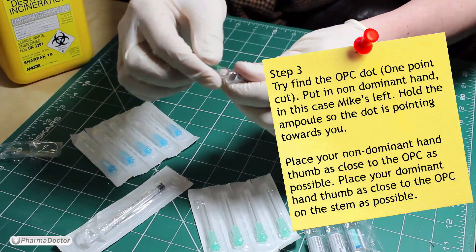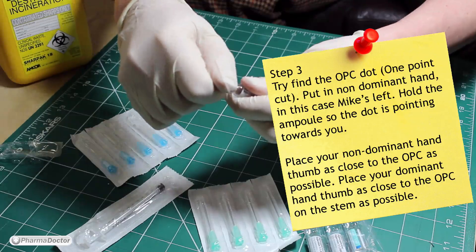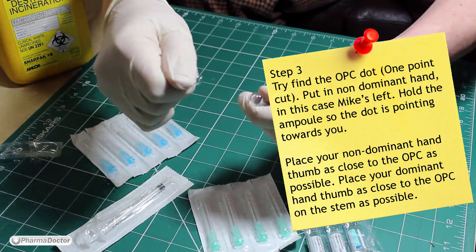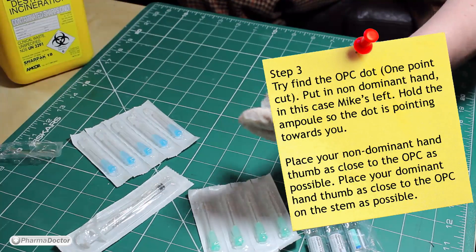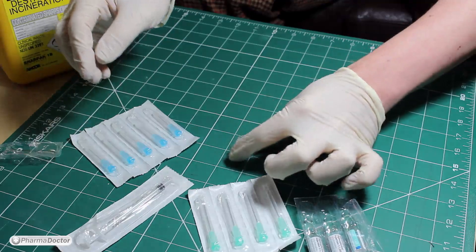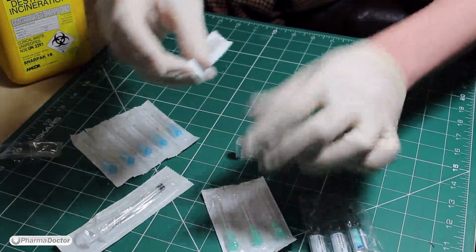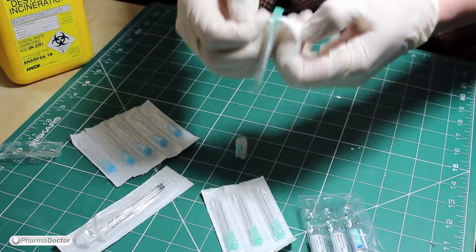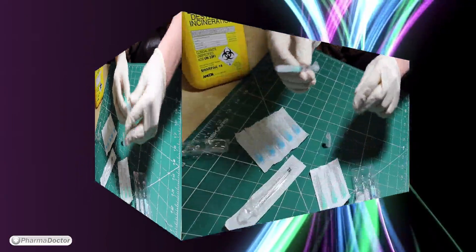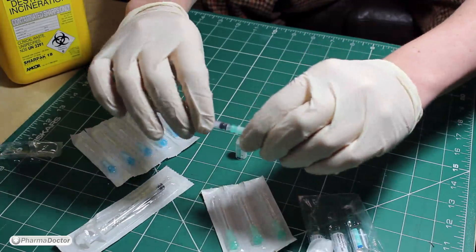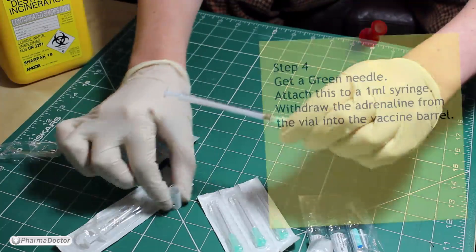The next step is to find the OPC dot, the one-point cut. Put the vial in your non-dominant hand, in this case it's my left, hold the ampoule so that the dot is pointing towards you. Place your non-dominant hand thumb as close to the OPC as possible, and then place your dominant hand thumb as close to the OPC stem as possible.